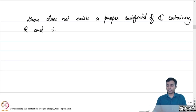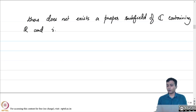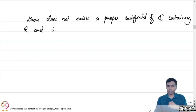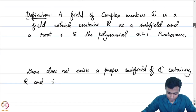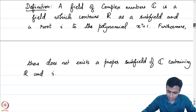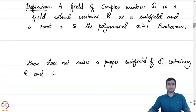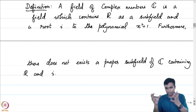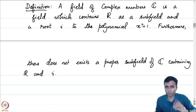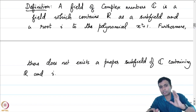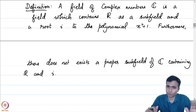When put differently, this says that C is generated by R and i. If C prime is a subfield of C which contains R and i, then C prime should necessarily be equal to C. Let me repeat the definition: a field of complex numbers is a field which contains R as a subfield, has a root i of x squared plus 1, and is the smallest such field containing both R and i.